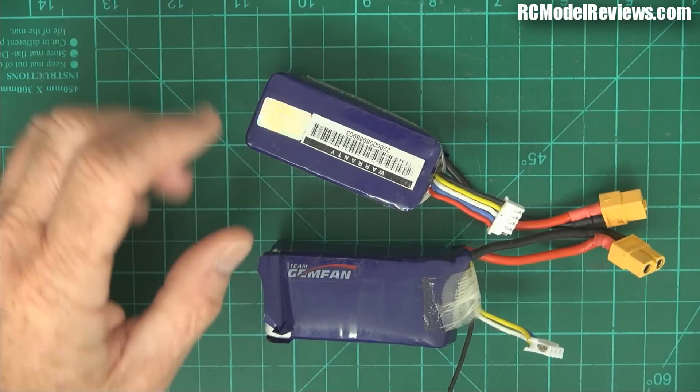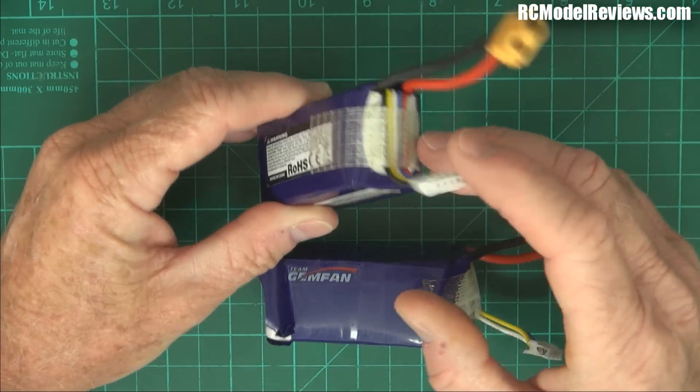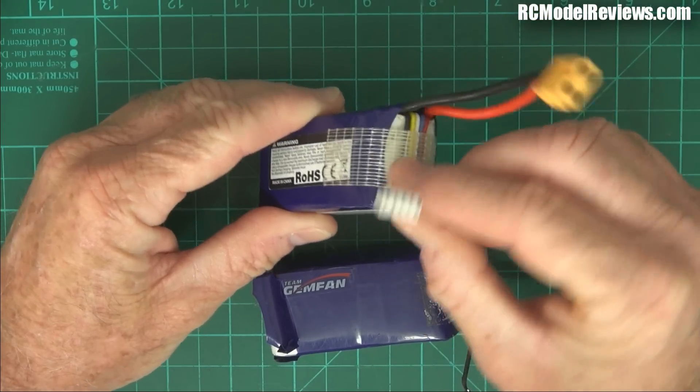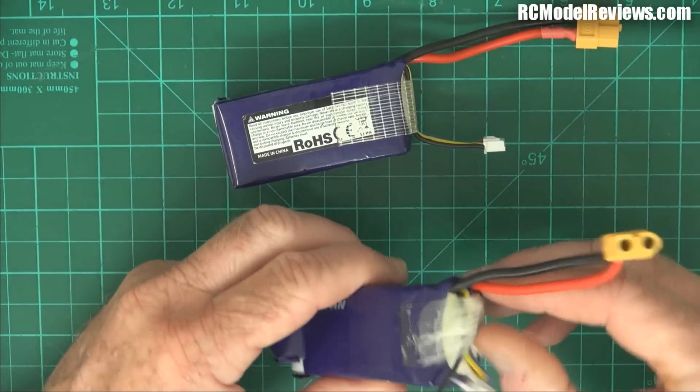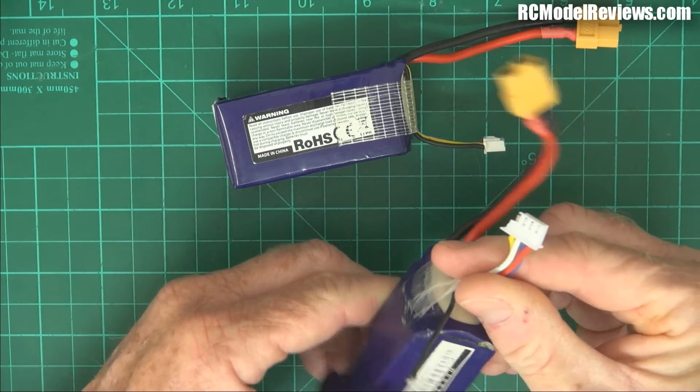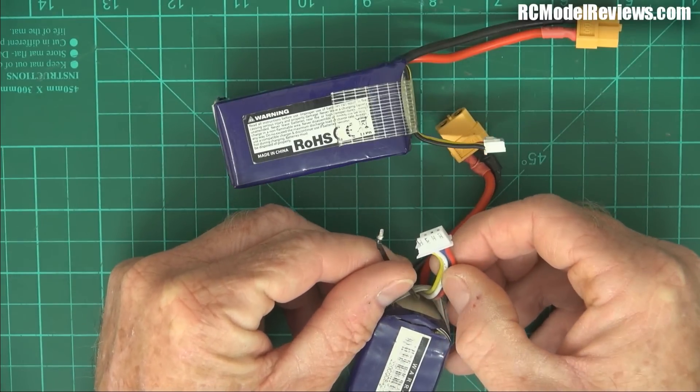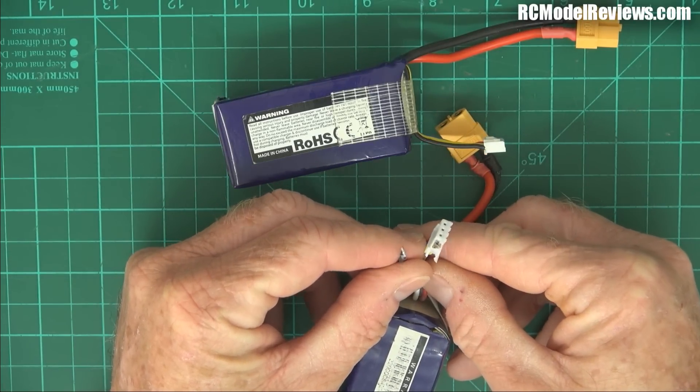Four cell 1300 milliamps, and another four cell 1300 milliamps. Now I normally tape down the balance leads so they don't get caught in the props, but even when you do that, sometimes they get caught in the props and this is what tends to happen - the balance plug gets munched.